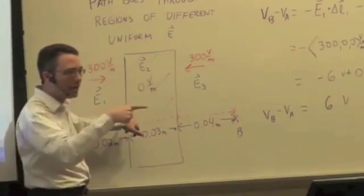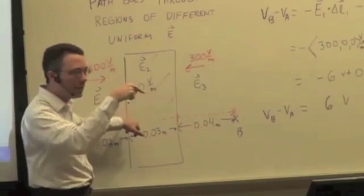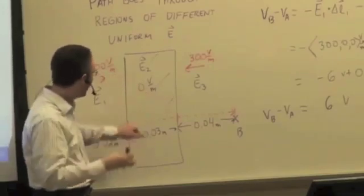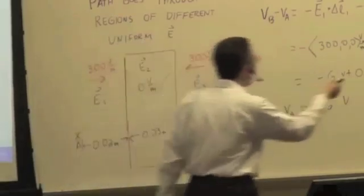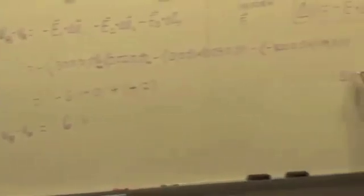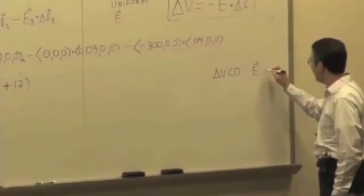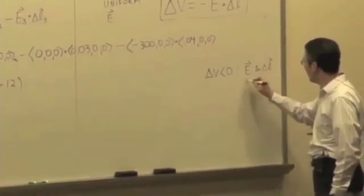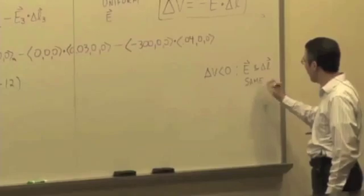If you're going in the direction of the field, the potential goes down, right? It's actually negative. So remember, we just erased it. But delta V is negative when electric field and delta L are in the same direction.